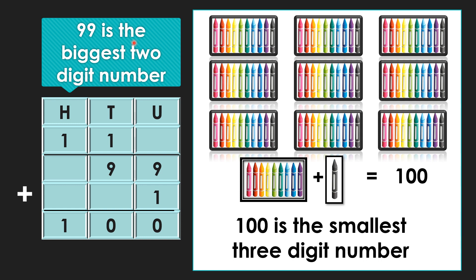99 is the biggest 2-digit number. When we add 1 to 99, we get 100. Here also we see that one more digit is introduced. We call it as the 100th place. 100 is the smallest 3-digit number.